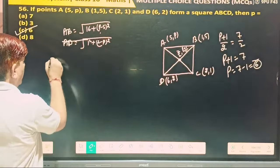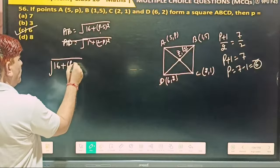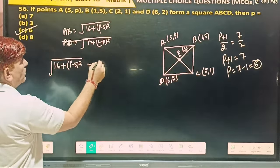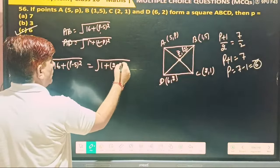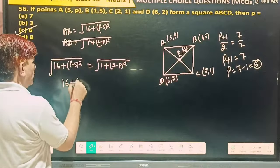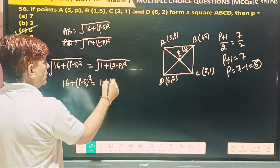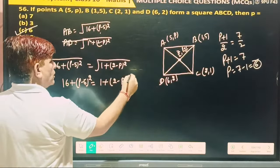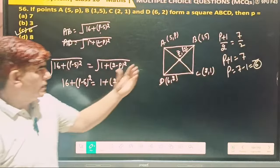So under root 16 plus P minus 5 whole square is equal to 1 plus 2 minus P whole square. So 16 plus P minus 5 whole square equal to 1 plus 2 minus P whole square. 2 minus 4, but this is easy one.